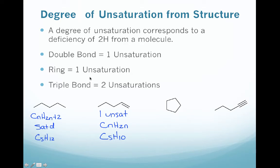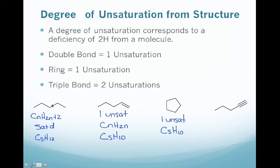An additional way to have 1 unsaturation is a ring. Here we have cyclopentane — this 1 ring counts as 1 unsaturation. Using the general formula CnH2n, or just counting up the carbons and hydrogens, you should find C5H10. Going from an acyclic alkane to a cyclic alkane is 1 unsaturation, or 1 loss of 2 hydrogens.